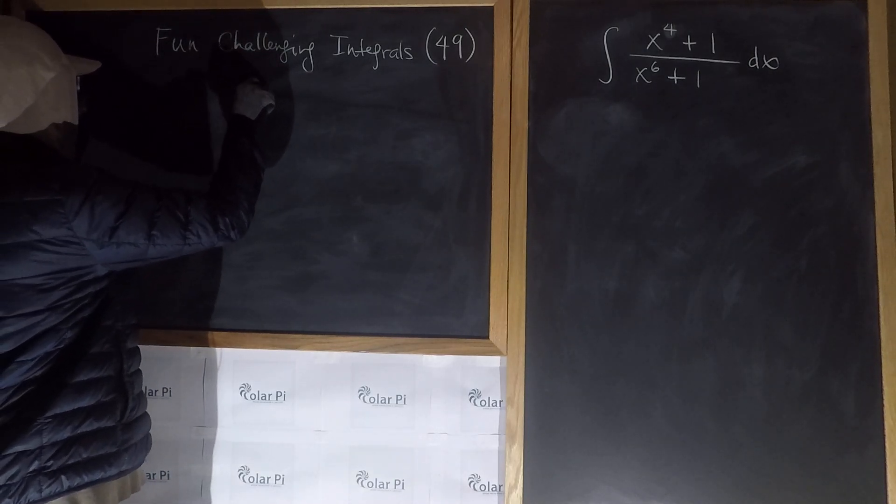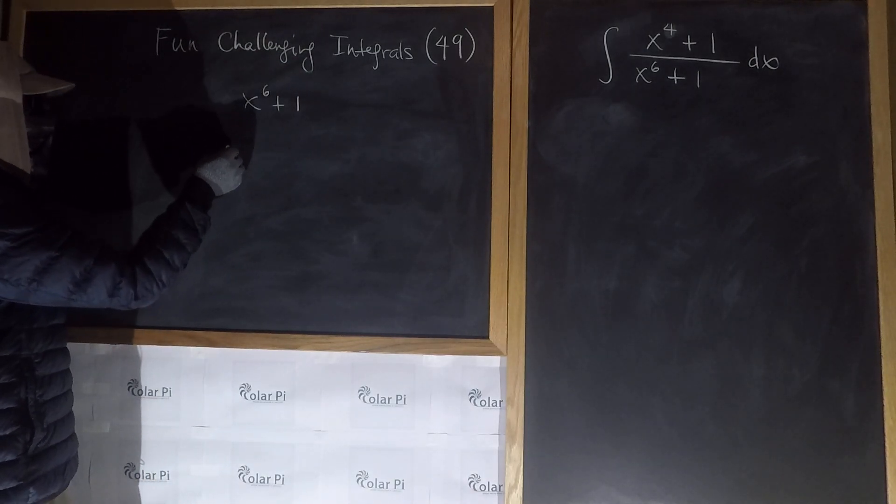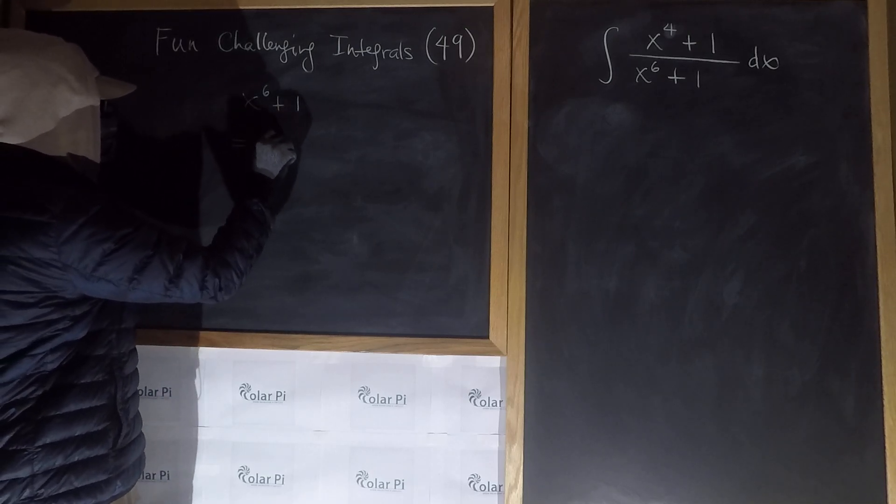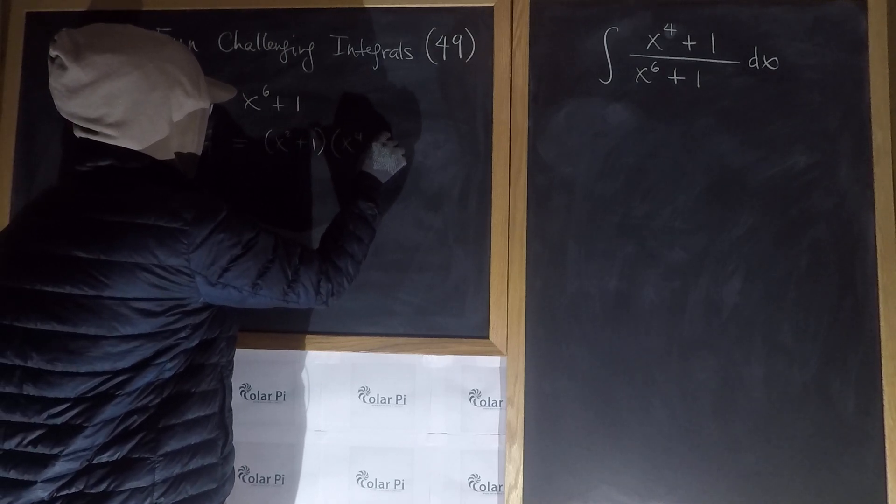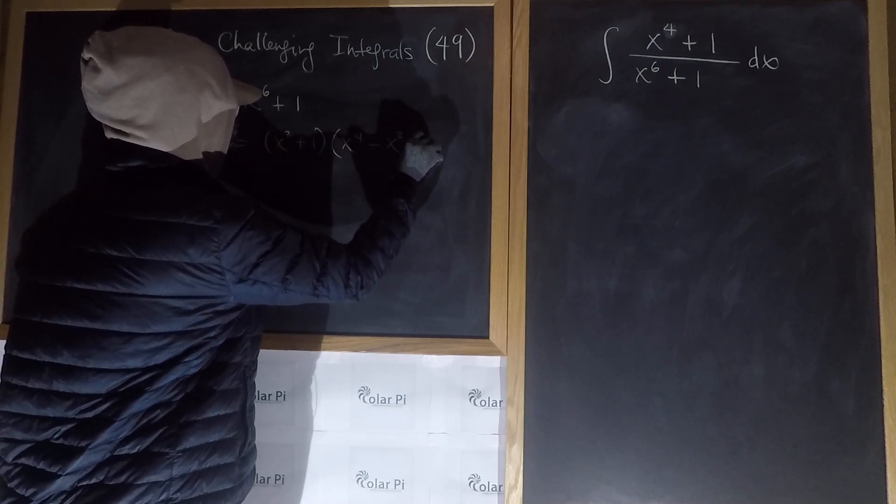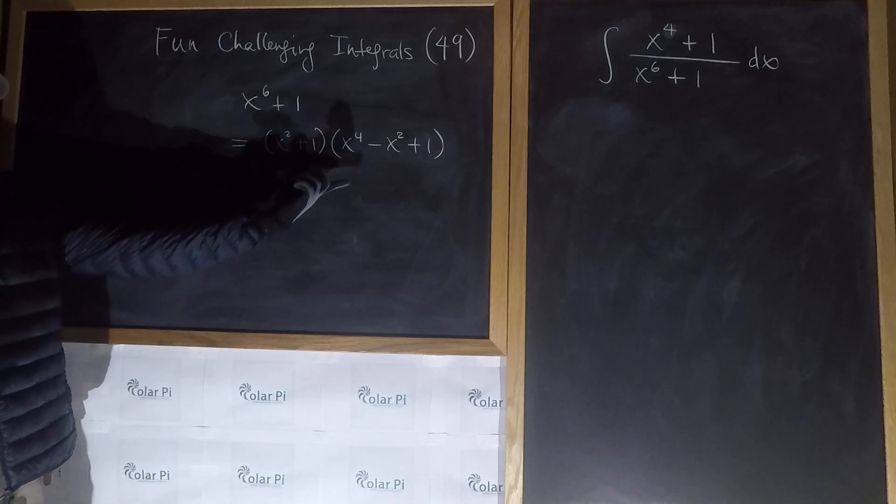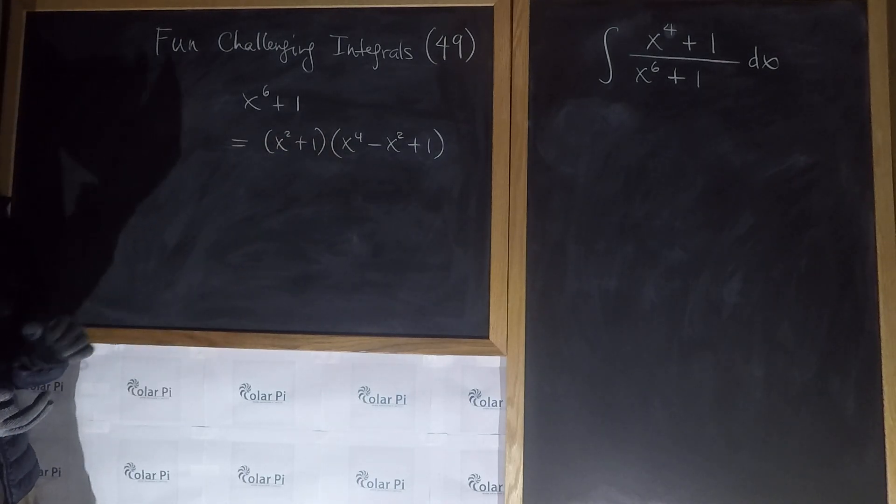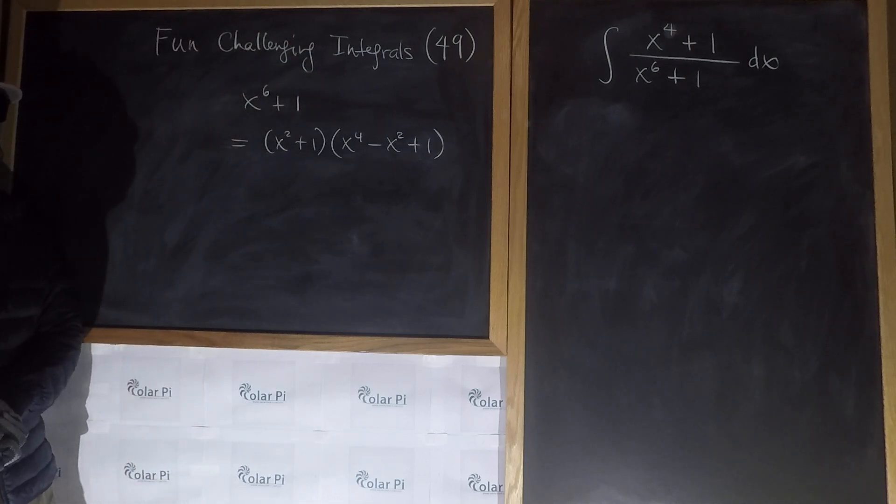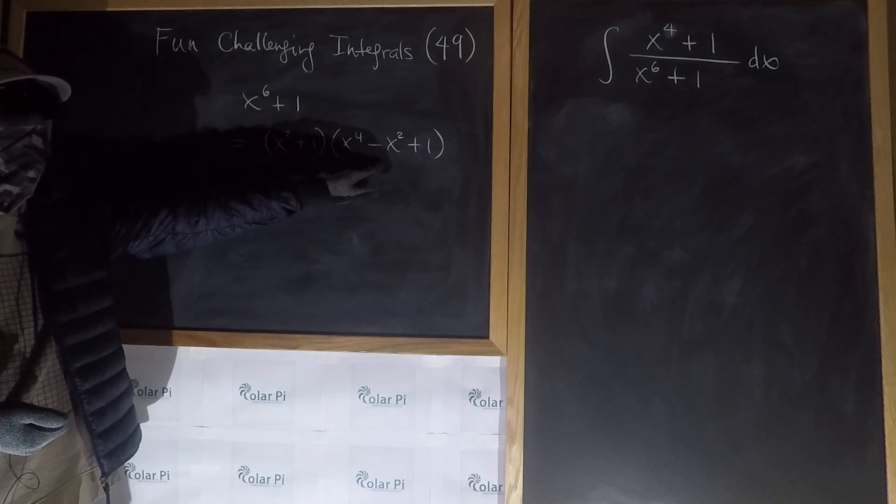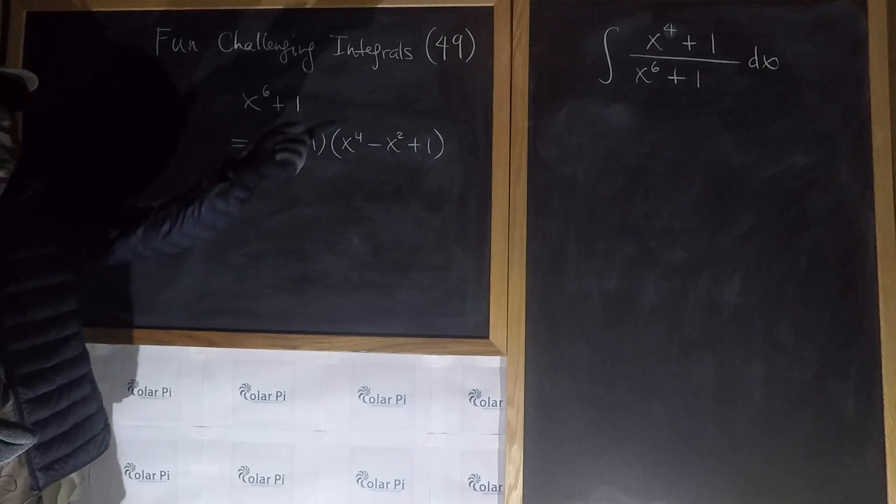So first, notice that x to the 6th plus 1 can be factored as x squared plus 1 times x to the 4th minus x squared plus 1. So the product of these two is x to the 6th plus 1. So we see in the numerator we have x to the 4th plus 1. The only thing missing is this minus x squared.